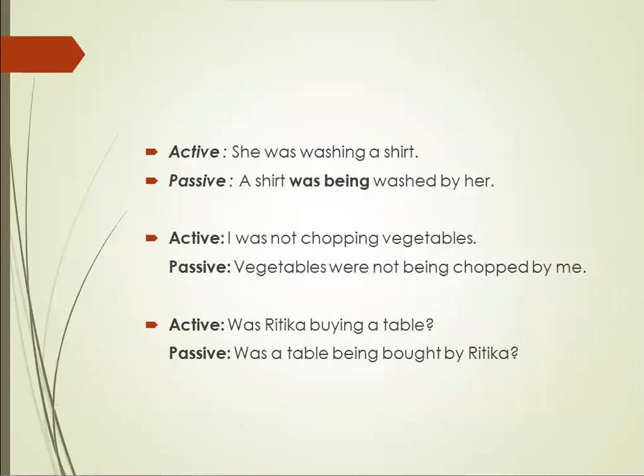Let's see the examples. 'She was washing a shirt.' Here, 'she' is the subject, 'was' is the auxiliary verb, 'washing' is the verb, and 'a shirt' is the object. According to the structure, we put the object first. Since 'was' is used in the active voice, we use 'was' with 'being.' So the passive is: 'A shirt was being washed by her.'